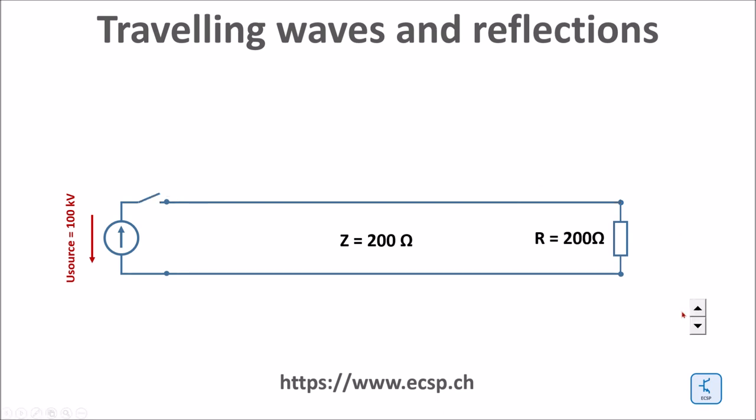If the resistance at the line end equals the line impedance there is no reflection. If there is a mismatch between the line and the termination impedance the traveling wave will be propagating according to the formula. After few cycles the termination impedance will be visible at the beginning of the line.